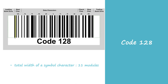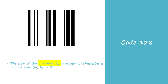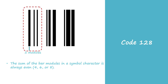In this sample barcode, modules 1 and 2 form a bar, module 3 is a space, module 4 is a bar, modules 5 and 6 form a space, module 7 is a bar, and modules 8, 9, 10, and 11 form a bar — totaling 11 modules. The sum of the bar modules in a symbol character is always even: either 4, 6, or 8. In this sample symbol character, the first bar element has two modules, the second has one module, and the last has one module, so the total bar elements have four modules.